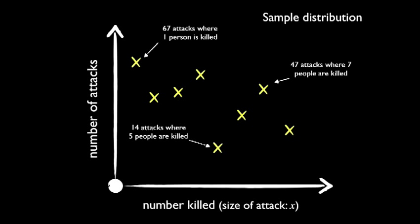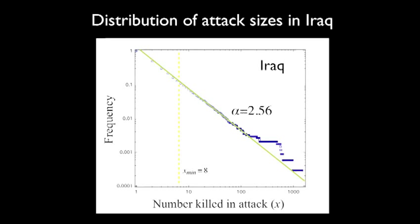We did this exact same thing for Iraq, and we didn't know what we were going to find. It turns out what we found was pretty surprising. You take all of the conflict, all the chaos, all the noise, and out of that comes this precise mathematical distribution of the way attacks are ordered in this conflict. And this blew our mind. Why should a conflict like Iraq have this as its fundamental signature? Why should there be order in war?